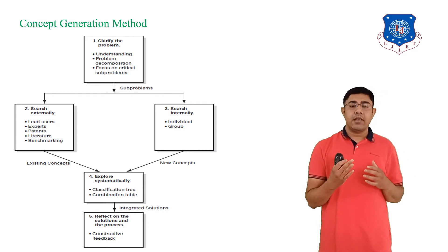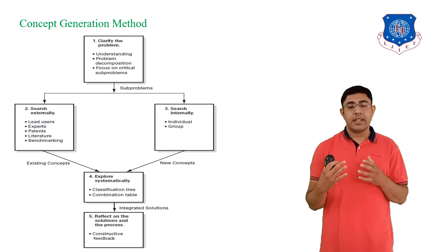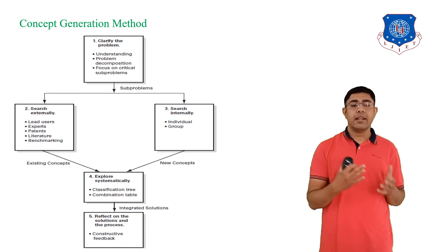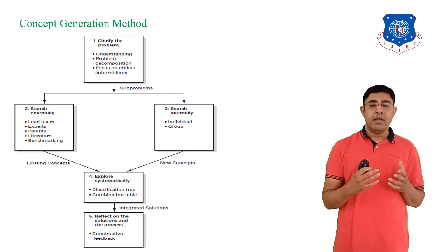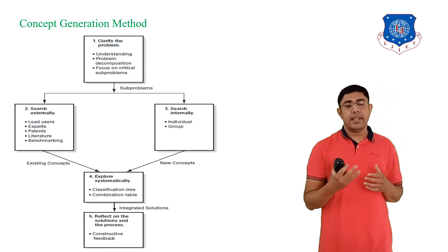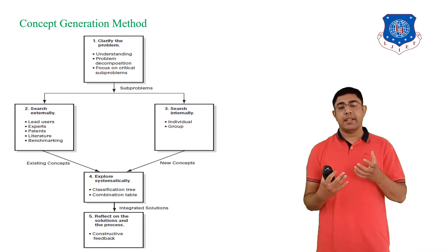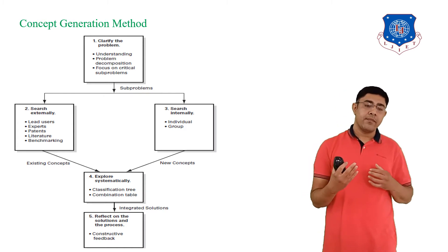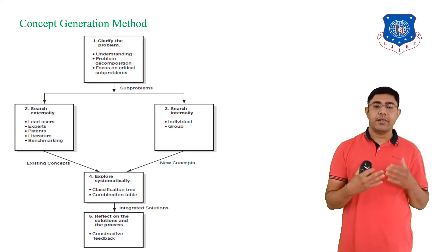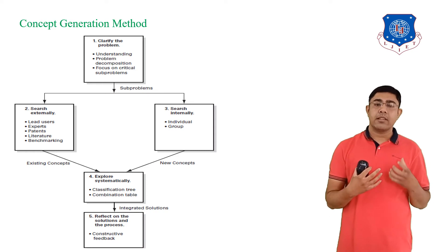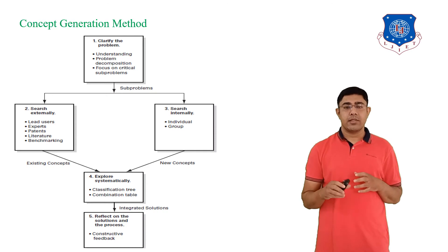The next step is to explore systematically. Step four is to explore the concepts systematically using tools like classification trees and combination tables. At the end of this step you get an integrated solution. Then in step five, you reflect on the solutions and the process, where a constructive fit is considered to evaluate the solutions. These are the five-step methods to generate concepts.